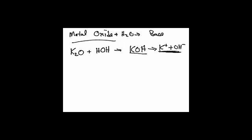So you're going to write K⁺ plus OH⁻. That's the actual correct answer. This equation is unbalanced, so if I've got two potassiums here, I'm going to need two potassiums on the other side. I just need to put a two in front of the OH⁻. Kind of guess and check — there's no rocket science to this.